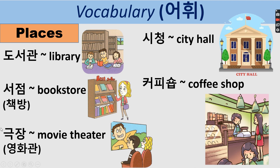So we have: 도서관 (library), 서점 (bookstore), 책방 (bookstore), 극장 (movie theater), 영화관 (movie theater), 시청 (city hall), and 커피숍 (coffee shop).